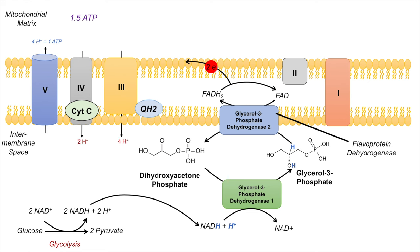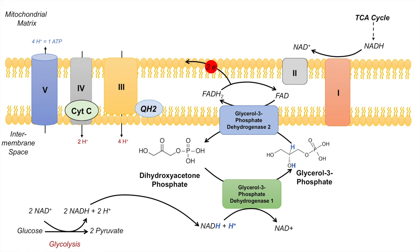This is different from NADH produced in the TCA cycle. NADH from the TCA cycle doesn't have to cross the mitochondrial inner membrane — it's already in the mitochondrial matrix. So NADH from the TCA cycle can be acted on by complex 1, donating its protons and electrons. In the process, complex 1 pumps out 4 protons into the intermembrane space. Those 2 hydrogen ions and 2 electrons are then provided to ubiquinone.